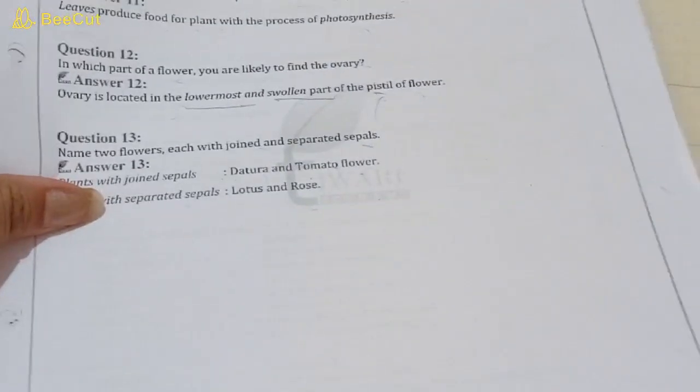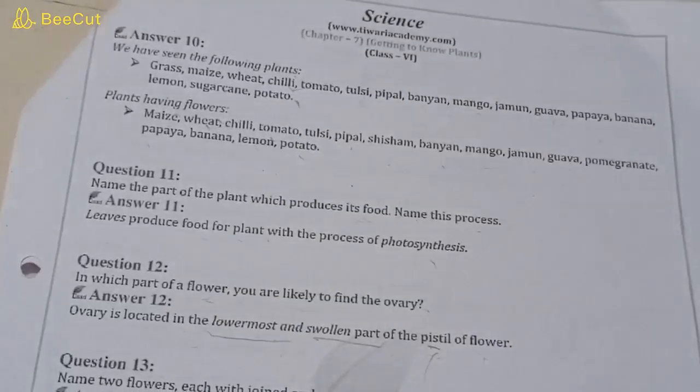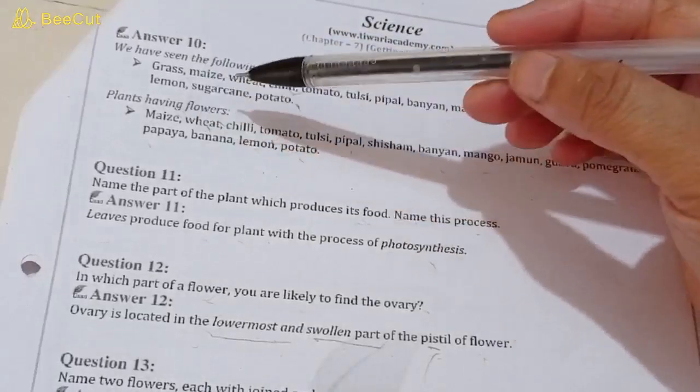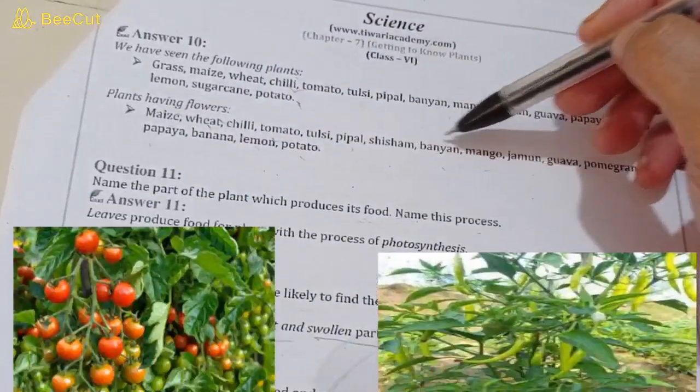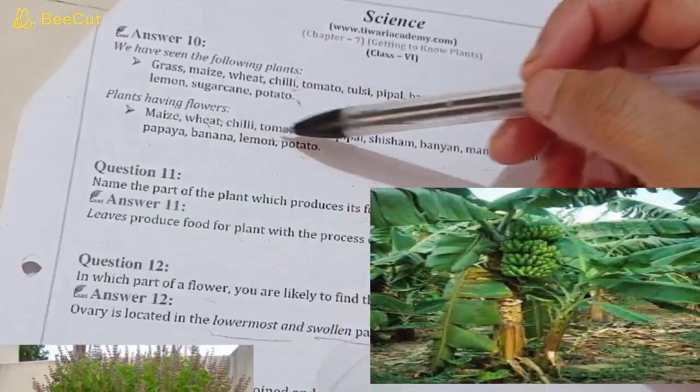Maize, wheat, chili, tomato, tulsi, peepal, shisham, banyan, mango, jamun, guava, pomegranate, papaya, banana, lemon and potato.